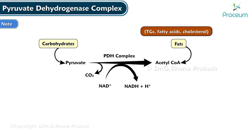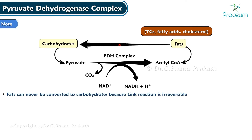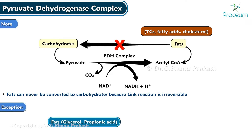Carbohydrates in excess can form fats, but fats can never be converted to carbohydrates because the link reaction is irreversible. An exception to this rule is glycerol and propionic acid, which are derived from fats but can be converted to glucose.